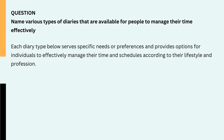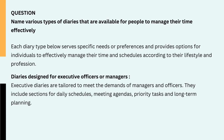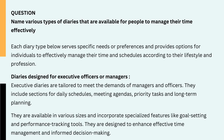Question: Name various types of diaries that are available for people to manage their time effectively. Each diary type serves specific needs or preferences and provides options for individuals to effectively manage their time and schedules according to their lifestyle and profession. 1. Diaries designed for executive officers or managers. Executive diaries are tailored to meet the demands of managers and officers. They include sections for daily schedules, meeting agendas, priority tasks and long-term planning, and are available in various sizes incorporating specialized features like goal setting and performance tracking tools, designed to enhance effective time management and informed decision making.